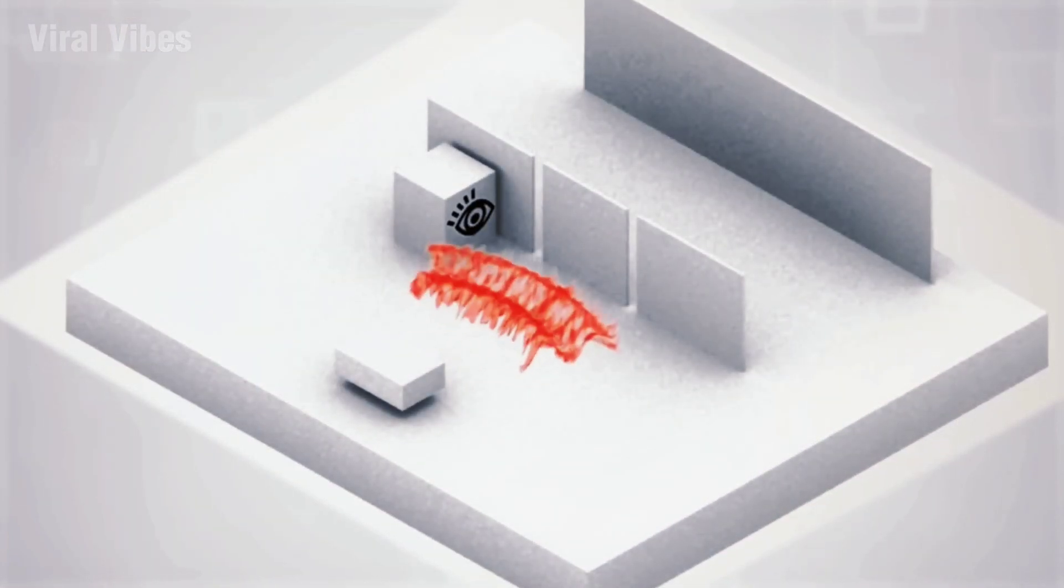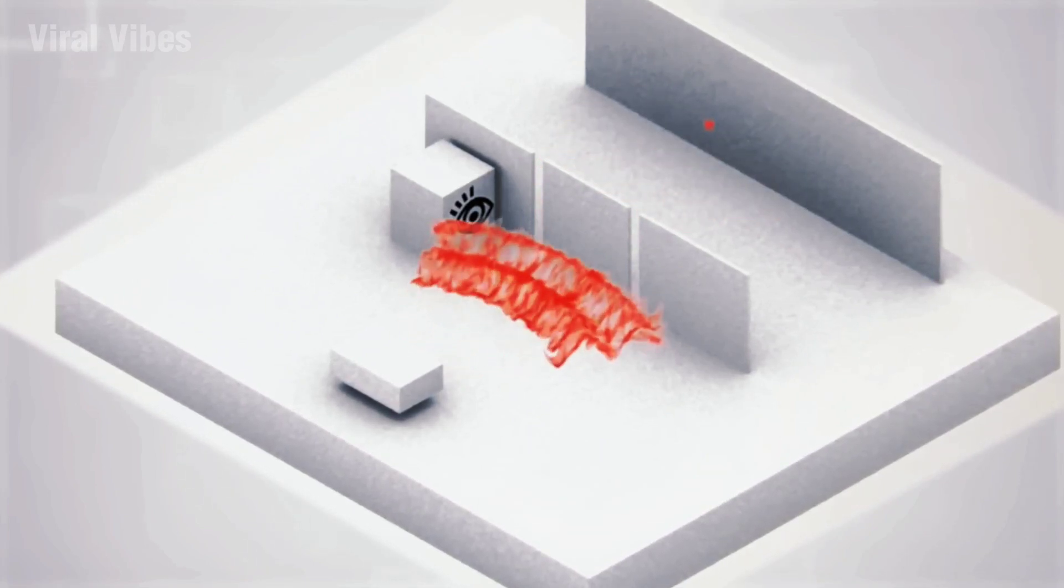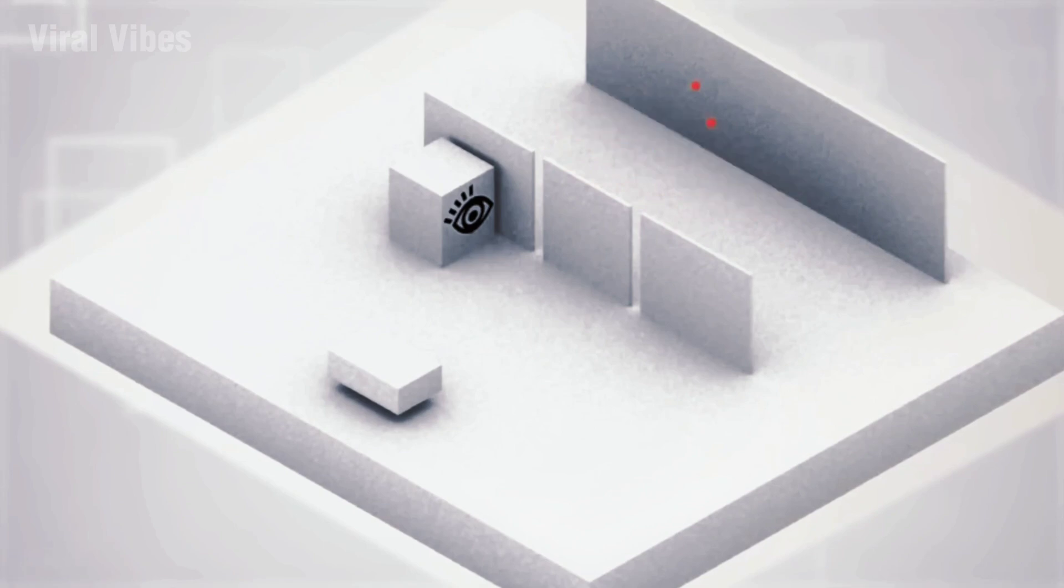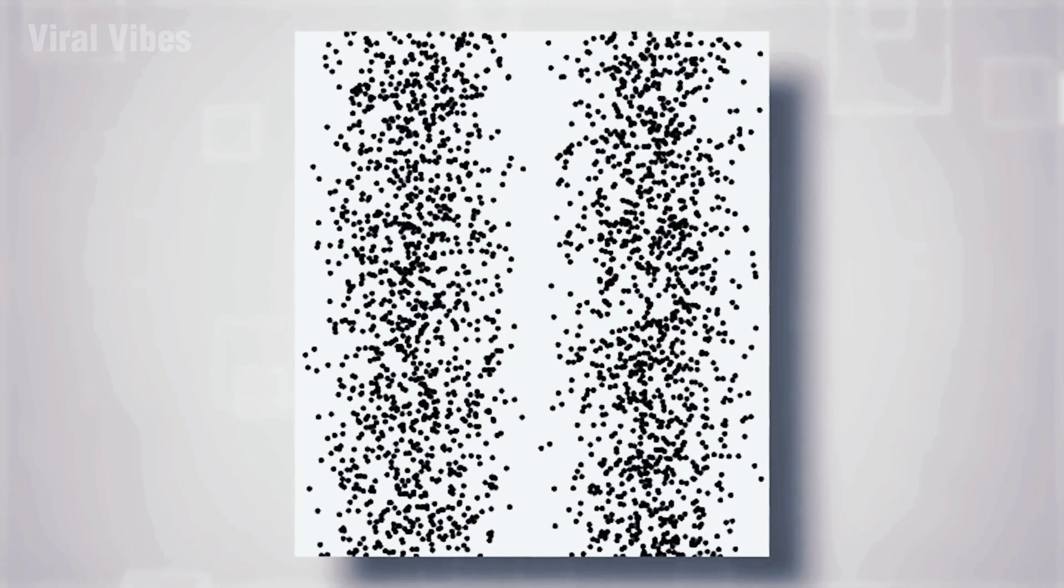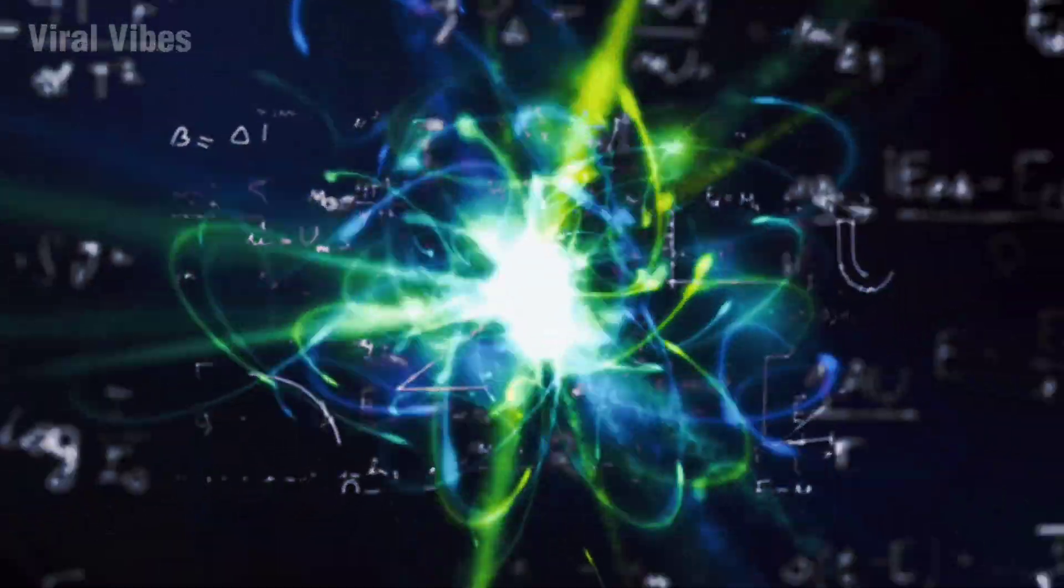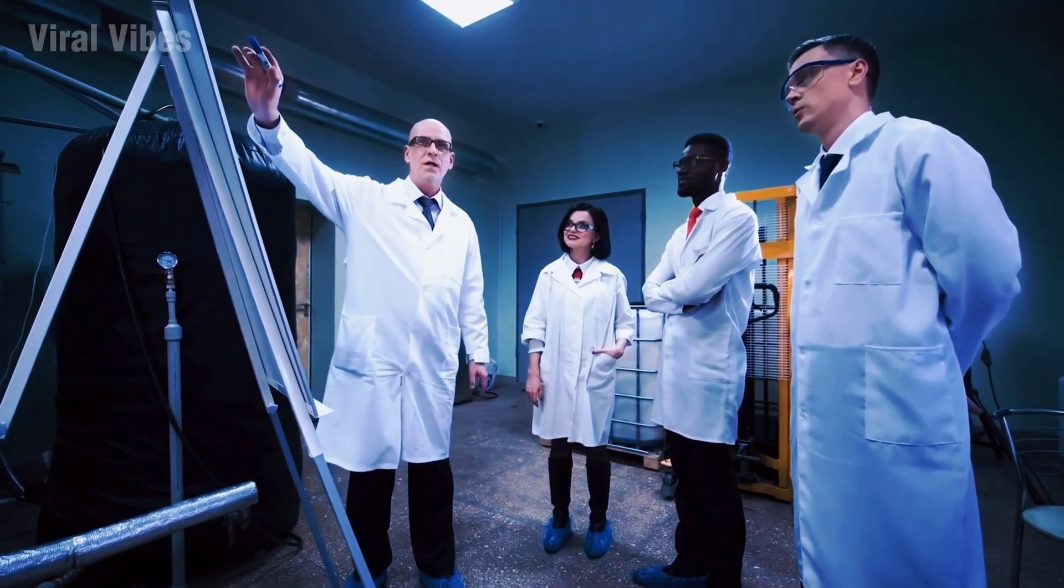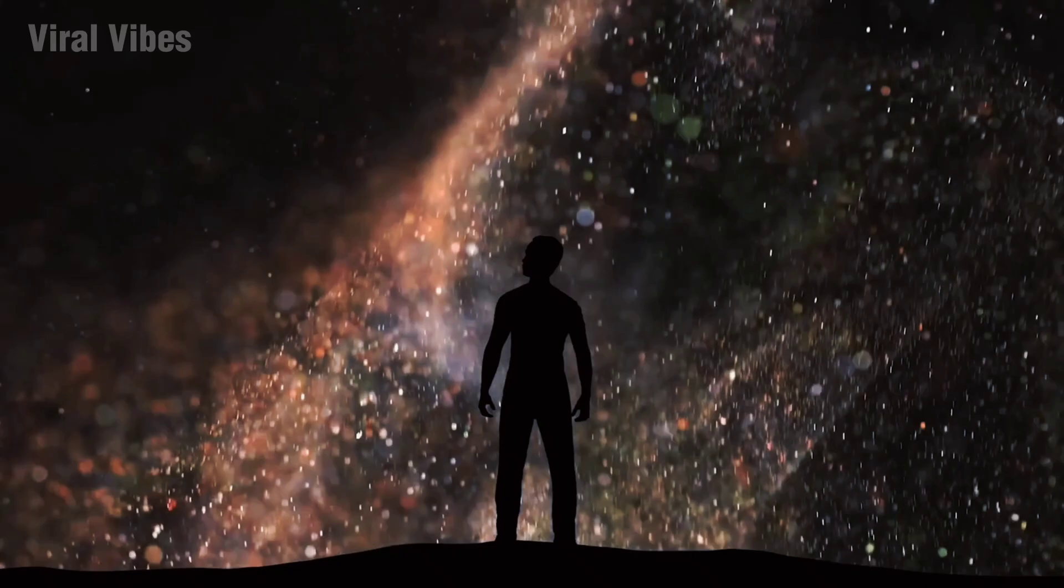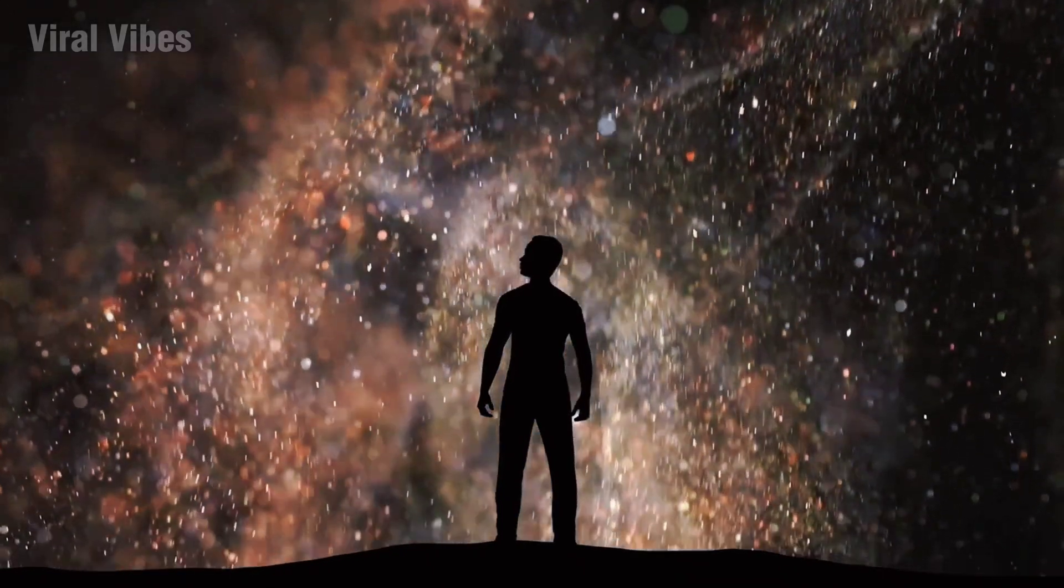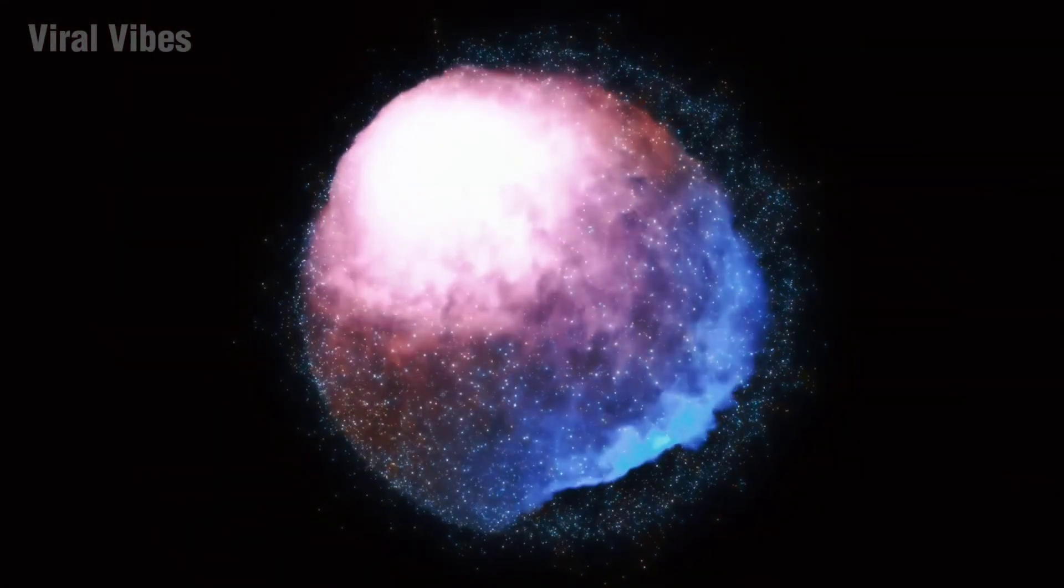To make it even weirder, when we try to watch which slit each electron goes through, the interference pattern disappears. It's as if the electrons know they are being watched and act differently. This experiment led scientists to discover that particles and waves can behave in strange ways, and it opened the door to a whole new field called quantum mechanics. It's a branch of science that deals with the strange and fascinating world of the tiniest building blocks of the universe.